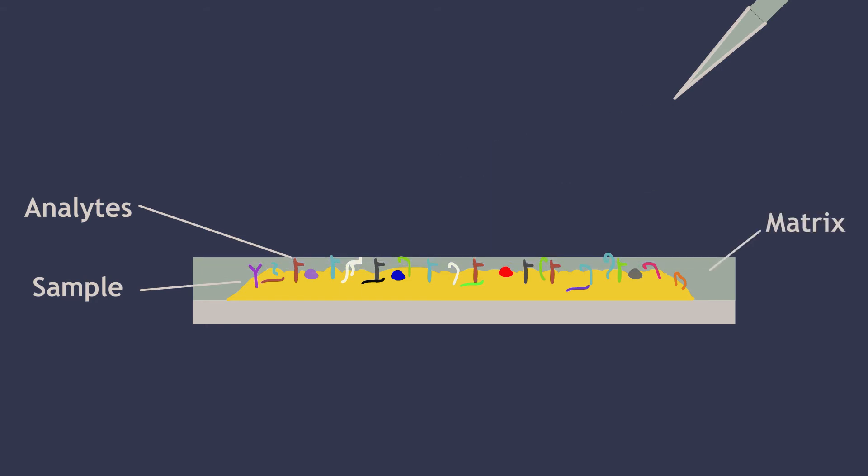A uniform layer is essential in generating unbiased data. The matrix assists mass spectrometry by localizing sample analytes and providing a suitable environment for ionization. Once deposited, matrix particles form co-crystals with the analytes, which lock them in place and ready for laser desorption.